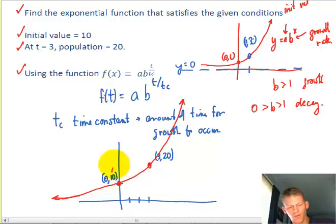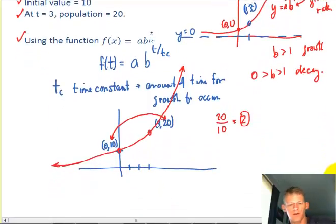So because I go from 10 initially to 20 at 3, I'm going to call this, I do division between the two. And that shows me that my model says it's going to be doubling. So I'm going to force the doubling situation to happen. I have y is equal to a, b to the time over t, c.